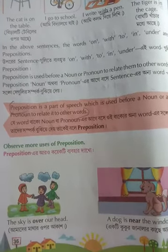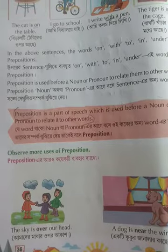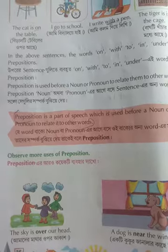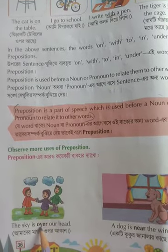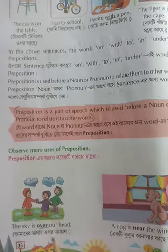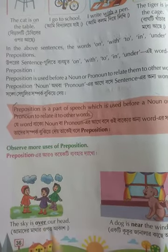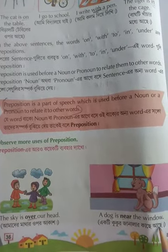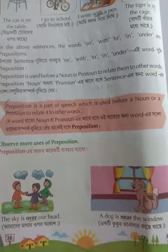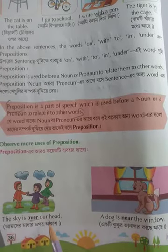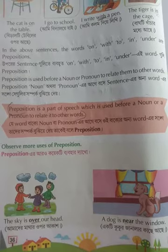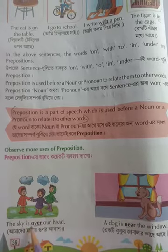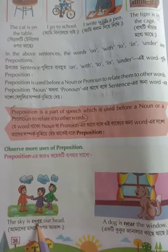আরো কয়েকটা sentence দেখো এখানে দিয়েছে — আরো কয়েকটা Prepositions যে বাক্যে ব্যবহার করা হয়। এখানে দেখো 'over' — over-টা দিয়েছে, over-টা হলো কী, এই sentence-এর মধ্যে হচ্ছে Preposition। তার পরে 'near' — near মানে কাছে। এই sentence-এর মধ্যে near-টা হচ্ছে Preposition। 'The sky is over our head' — আমাদের মাথার উপর আকাশ। তাই তো, over মানে হচ্ছে উপরে, আর এই sentence-এ over-টা হচ্ছে Preposition।